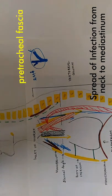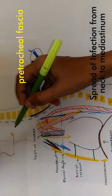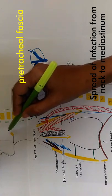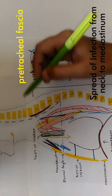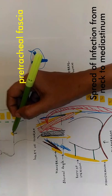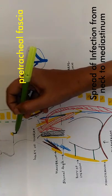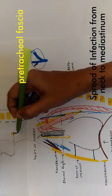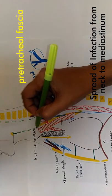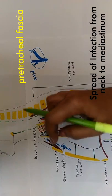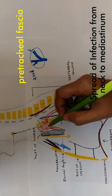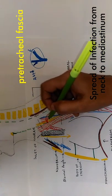The pre-tracheal fascia is attached superiorly to the hyoid bone, the thyroid cartilage, and the cricoid cartilage. It passes behind the brachiocephalic veins, enters the superior mediastinum, and blends with the arch of the aorta.